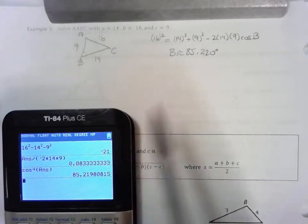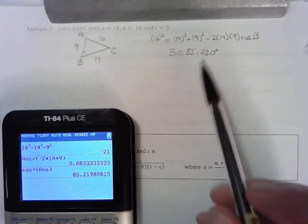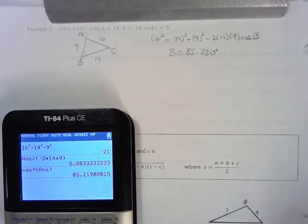This gives me an angle of approximately 85.219. So the measure of angle B is about 85 degrees. The other two must add up to be something like 95 degrees.